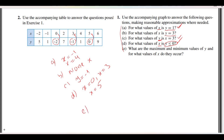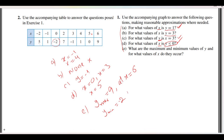Part E asks for the maximum and minimum values of y. Looking at all y values in the table — 5, 1, -2, 7, -1, 1, 0, and 9 — the maximum is 9, occurring at x = 6. The minimum value is -2, and that corresponds to x = 0.